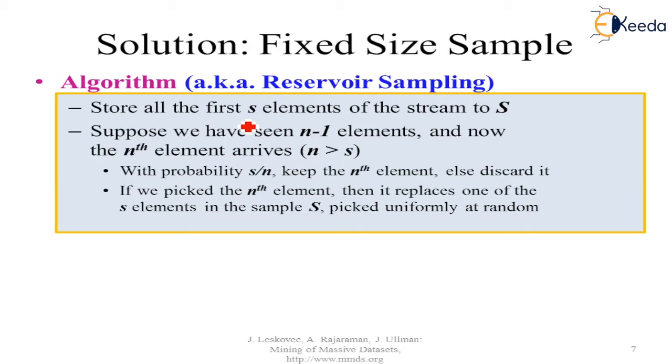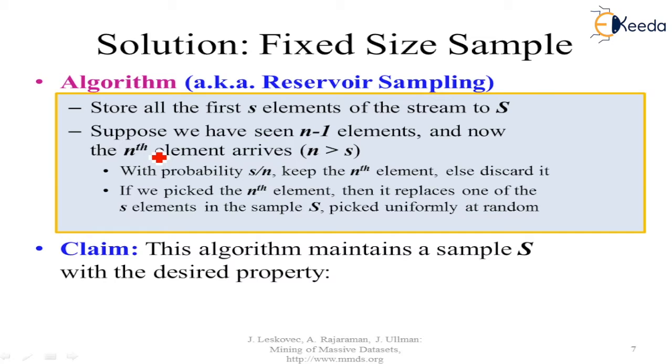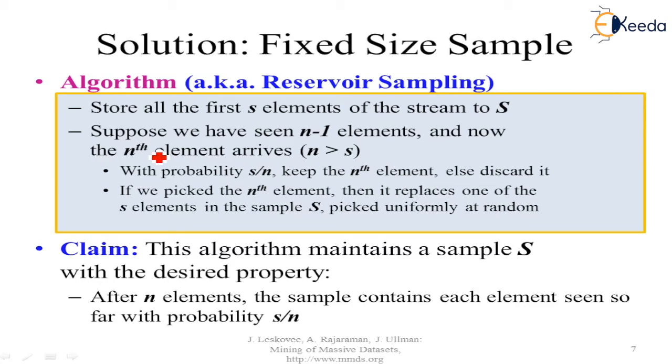So solution is fixed size sample which is also known as reservoir sampling. So what we are going to do is store all the first S elements of the stream. Suppose we have seen N-1 elements. Now the nth element arrives, N greater than S, with probability S by N. Keep the nth element else discard it. If we pick the nth element then it replaces one of the S elements in the sample S. Pick uniform random item. So this algorithm maintains the sample S with the desired property. After N elements, the sample contains each element seen so far with probability S by N.